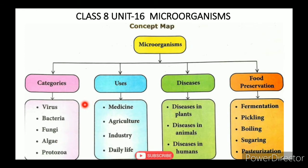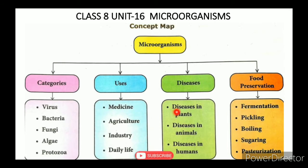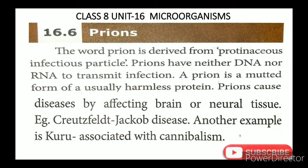6th topic வந்து PREONS — அதுதான் இன்னைக்கு பாக்கப்போறோம். 7th topic வந்து VIRIONS. 8th topic — Uses of microorganisms, அதுல Food Preservation-உம் வந்துடும். 9th topic — அது last topic — Harmful microorganisms, அதுல diseases பத்திப் பாப்போம். இன்னைக்கு நம்ம 6th topic PREONS பத்தி சொல்லிப் பாக்கப்போறோம். (6th topic is PREONS — that's what we're covering today. 7th is VIRIONS, 8th is Uses of Microorganisms including Food Preservation, and 9th is Harmful Microorganisms covering diseases. Today we focus on PREONS.)